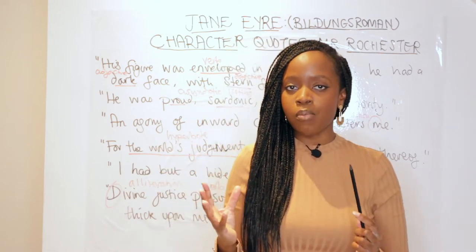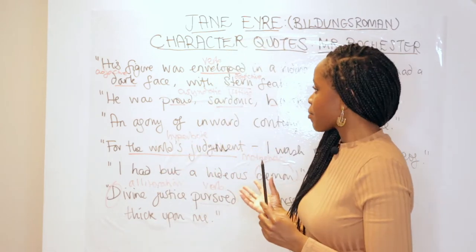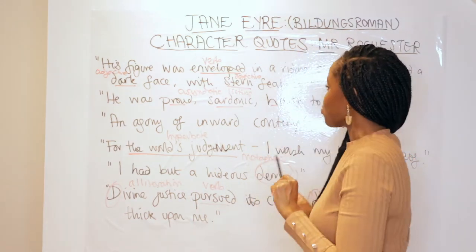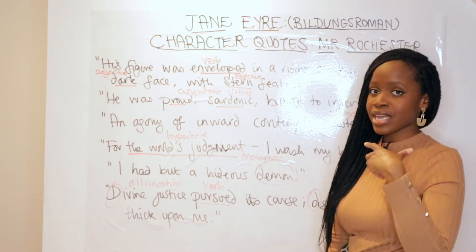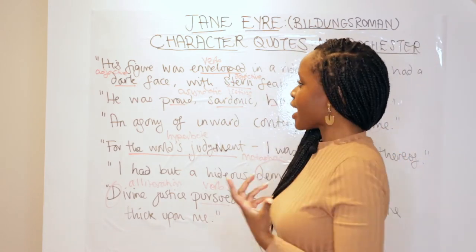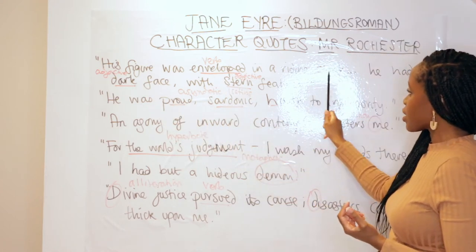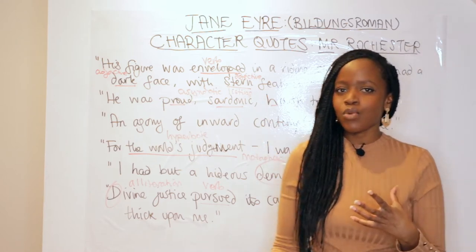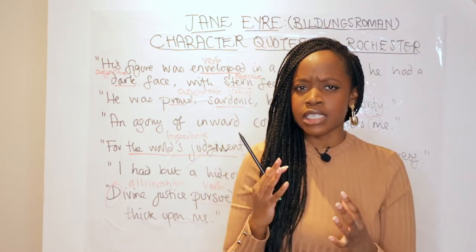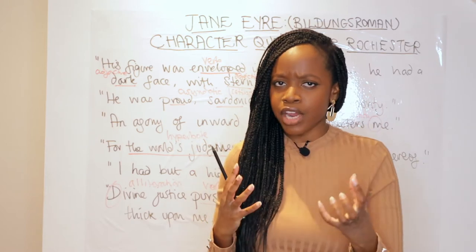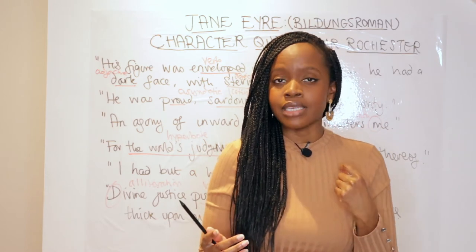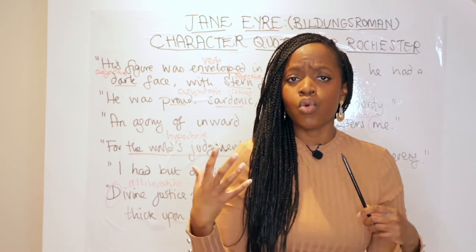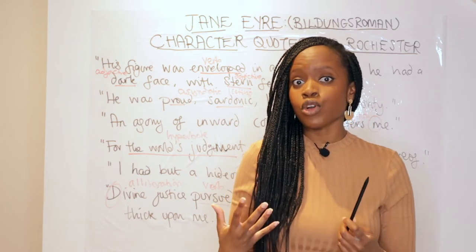He's a really interesting and complex character. As you can see behind me, I have created key quotations to remember for him. The first quotation to remember is how he is described when he first appears: 'his figure was enveloped in a riding cloak... he had a dark face with stern features.' This establishes him as a rugged Byronic male hero — intriguing, not conventionally handsome, but seemingly tormented by something within.